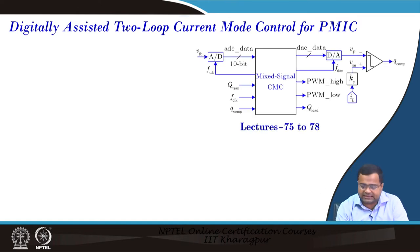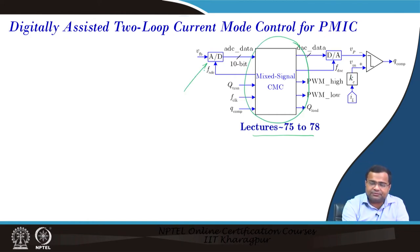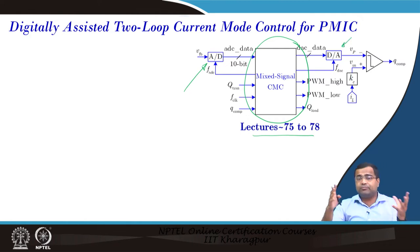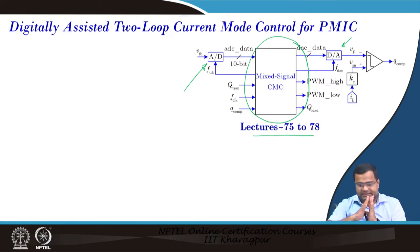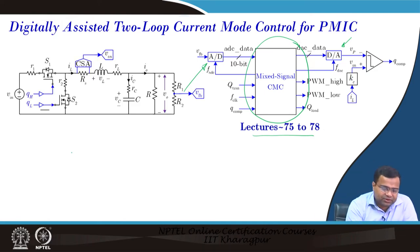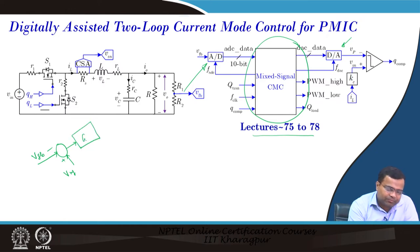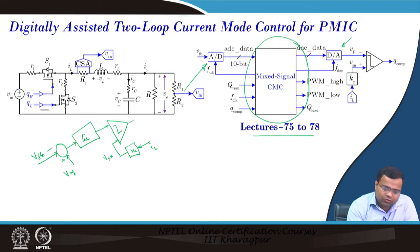Moving to two-loop current mode control, as discussed in lectures 75 to 78 on mixed-signal current mode control — we need an ADC and a DAC, which may not be affordable for many applications due to high cost, power consumption, delay, and DAC expense. An alternative: take the feedback voltage negative, apply a reference voltage, feed through an error amplifier compensator, and compare directly with V-sense via an analog comparator sensing inductor current. From the modulator onward, it becomes the digital part.